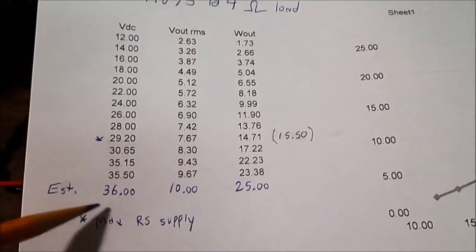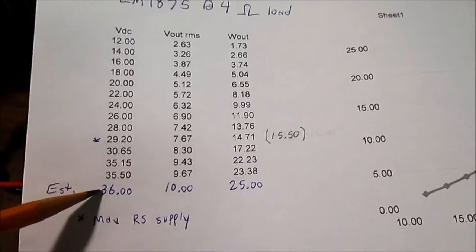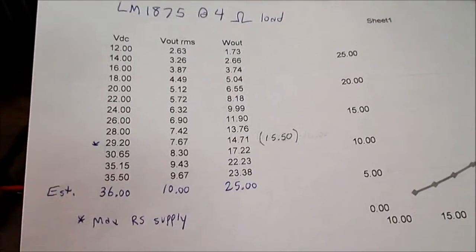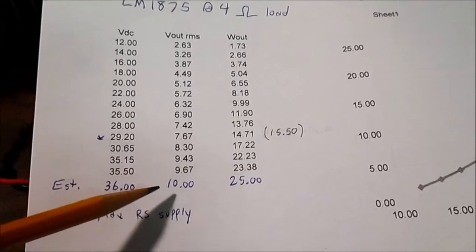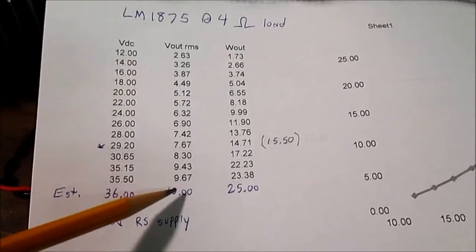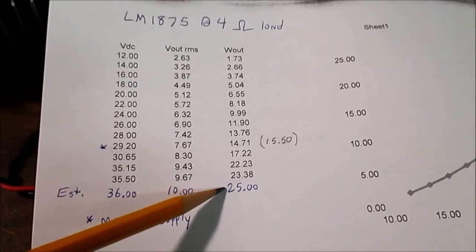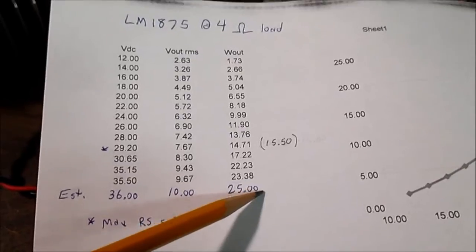So I'm just kind of estimating, if I had a supply that would hit 36 volts, that's plus and minus 18 volts, I could have got a 10 volt RMS output waveform and we probably would have got our 25 watt output.